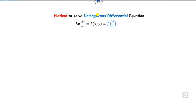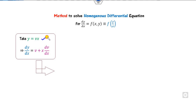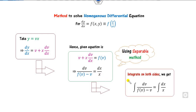Once you have a homogeneous differential equation, how can you solve it? It is very simple. Whenever there is a homogeneous equation, we can use the substitution y = vx, where v is a function of x. Then find dy/dx using the product rule, substitute this value in the equation, and then we can use the variable separable method and integrate to get the answer.